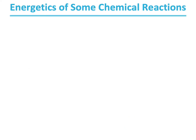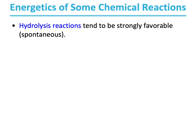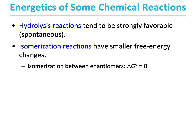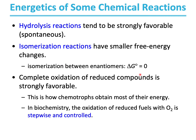Hydrolysis reactions tend to be strongly favorable because they are spontaneous. Isomerization reactions have smaller free energy changes; isomerization between enantiomers usually happens at equilibrium. Complete oxidation of reduced compounds is strongly favorable — this is how chemotrophs obtain most of their energy. In biochemistry, the oxidation of reduced fuels with oxygen is stepwise and controlled.